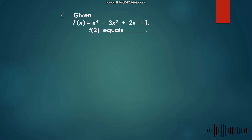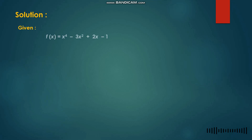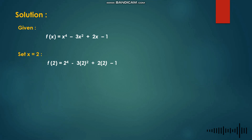Number 4: Given f(x) = x⁴ − 3x² + 2x − 1, find f(2). A) 1, B) 23, C) 33, D) 7. For this problem we are asked to evaluate the function at f(2), meaning we set x equal to 2 and substitute 2 in place of all x values in the expression.